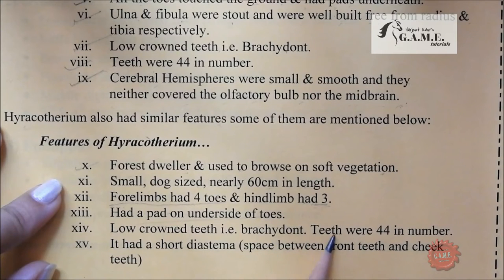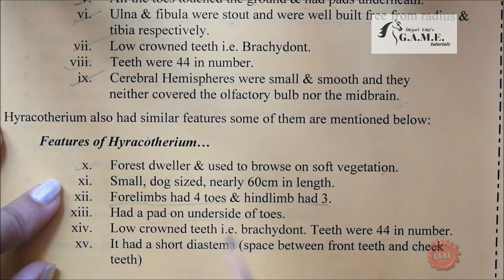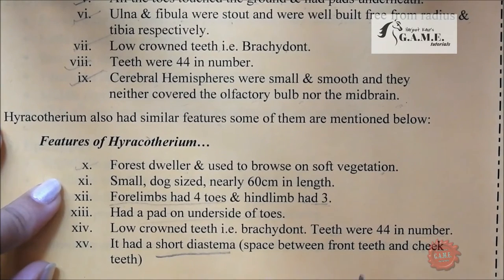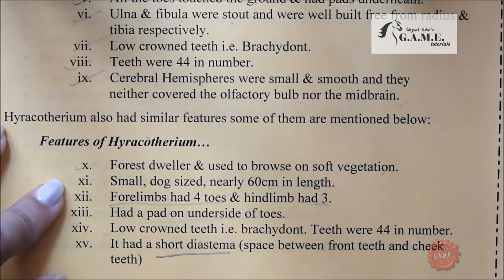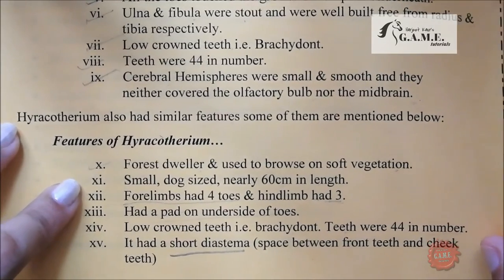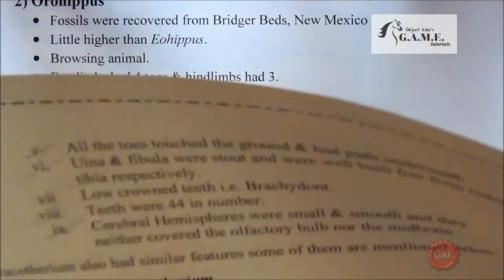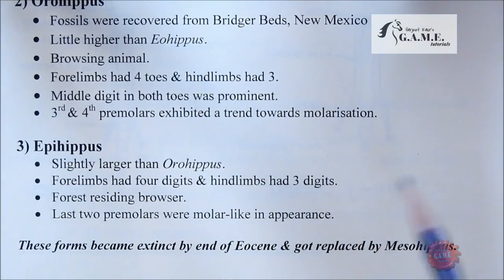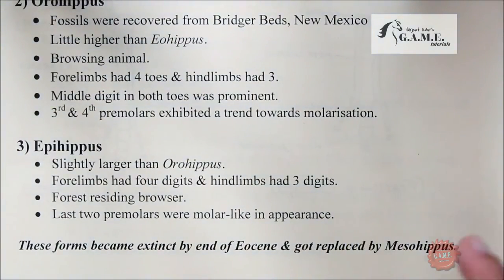Low crown teeth, teeth were 44 in number, and short diastema. Diastema is the space between the front teeth and cheek teeth.